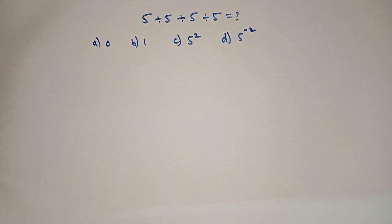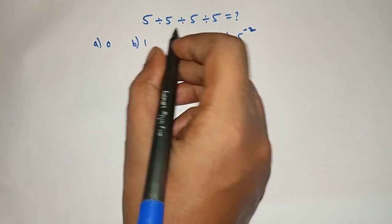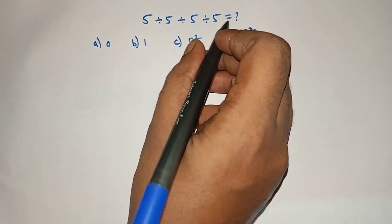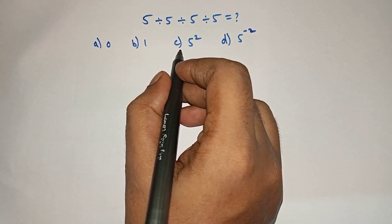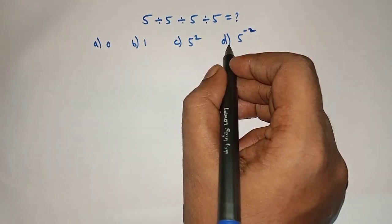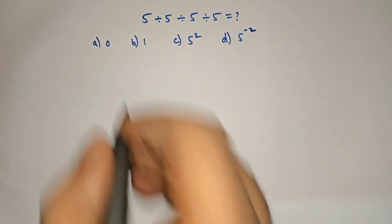Hello friends, welcome to Aha Math. 5 divided by 5 divided by 5 divided by 5 is equal to what? Option A: 0, Option B: 1, Option C: 5 raised to 2, Option D: 5 raised to minus 2. So let's solve.